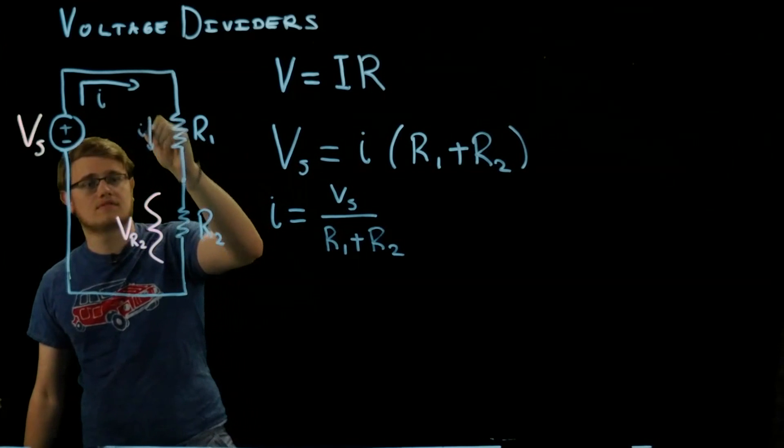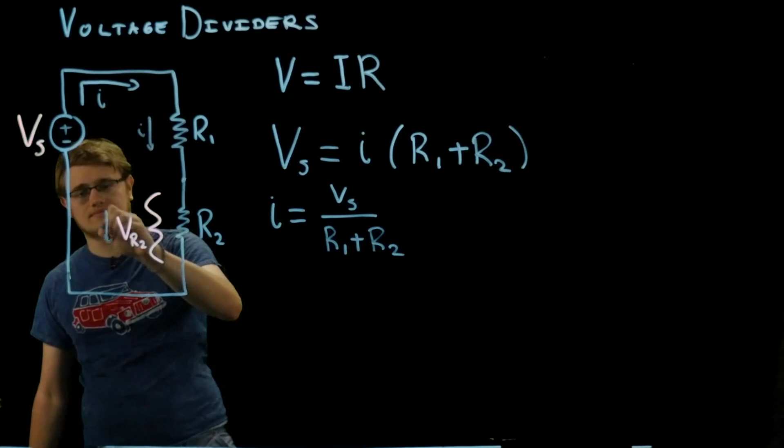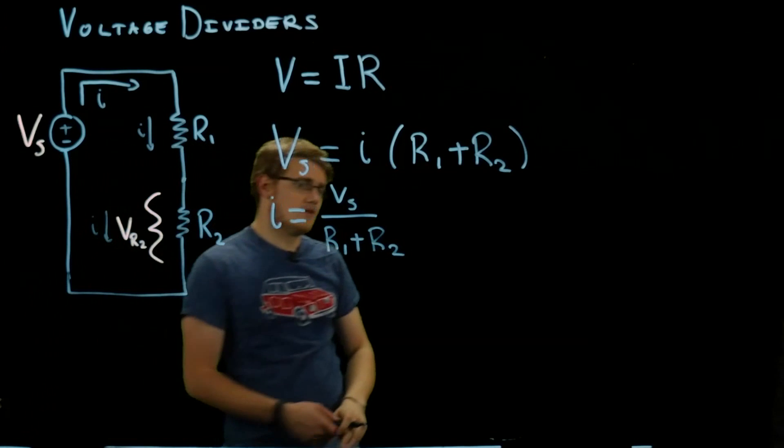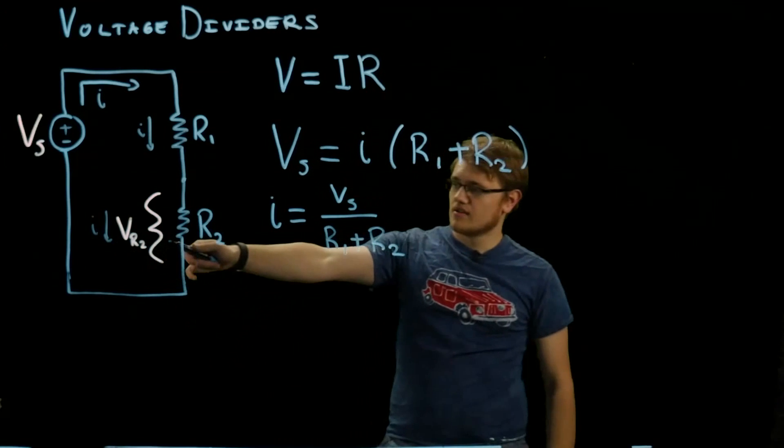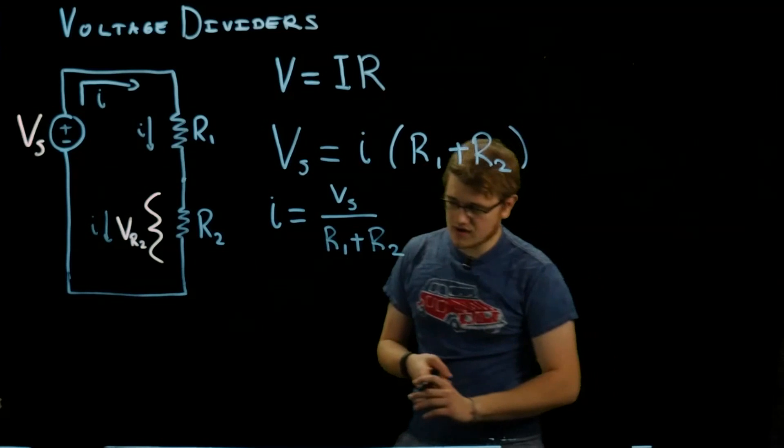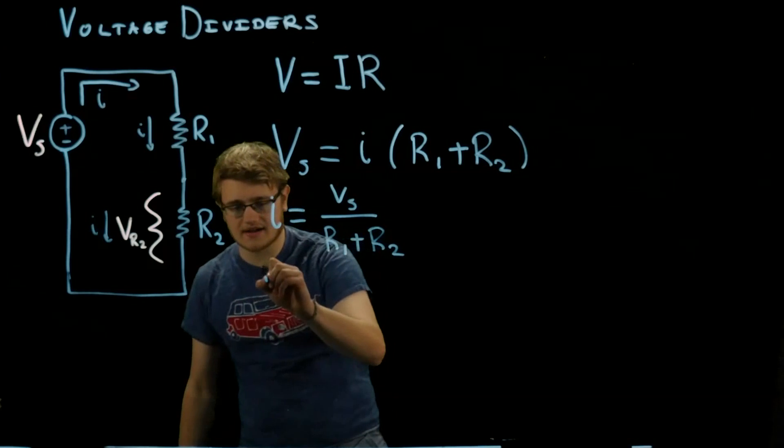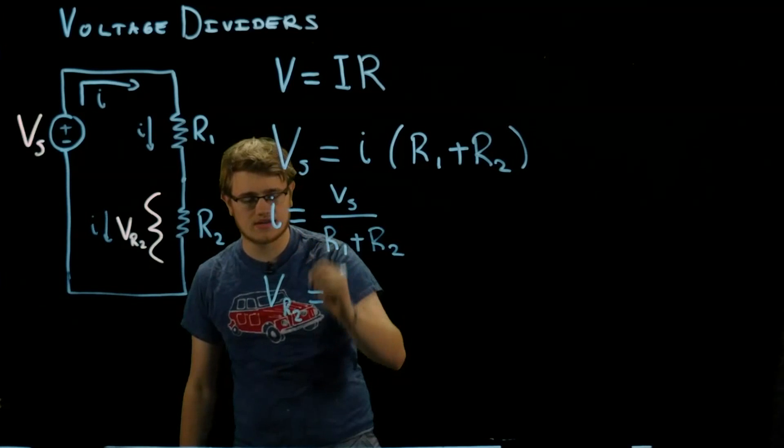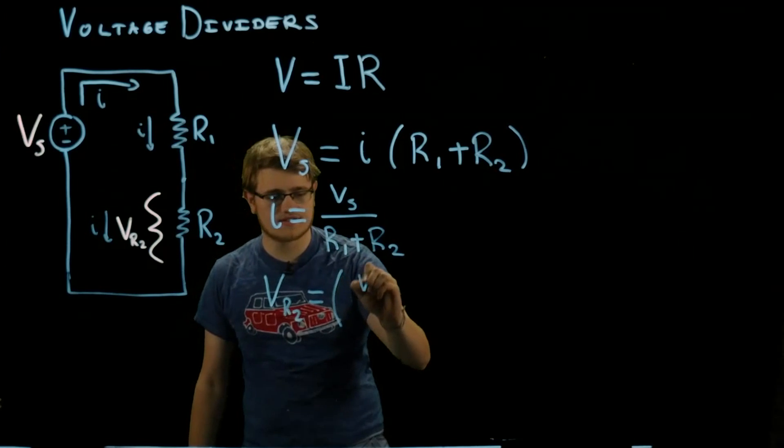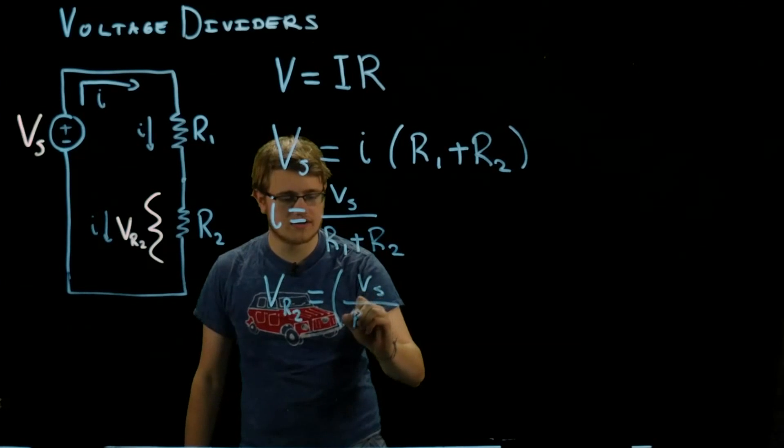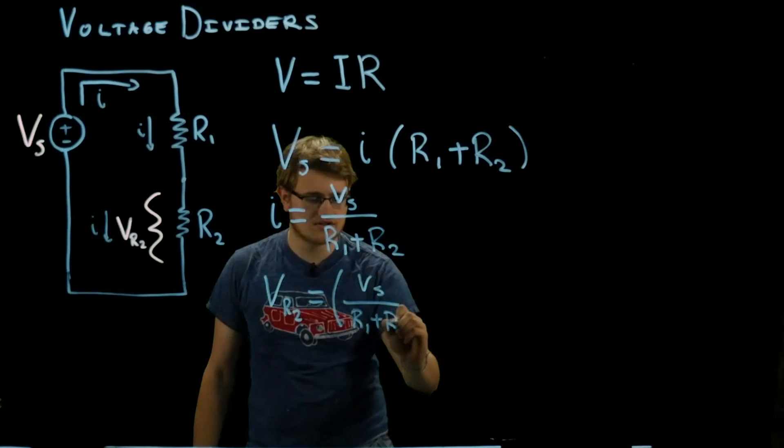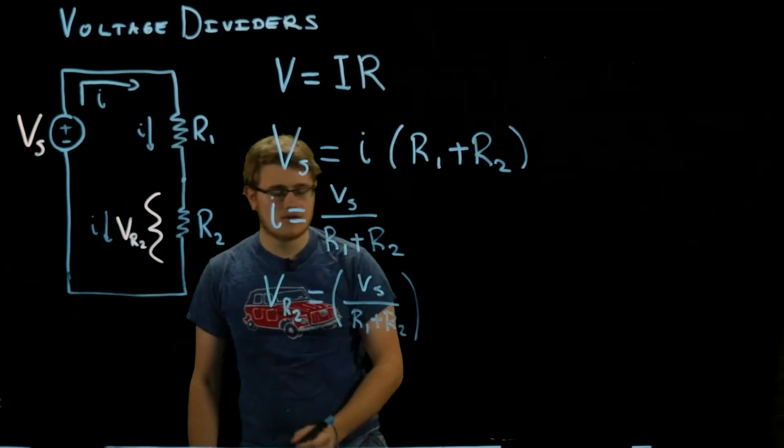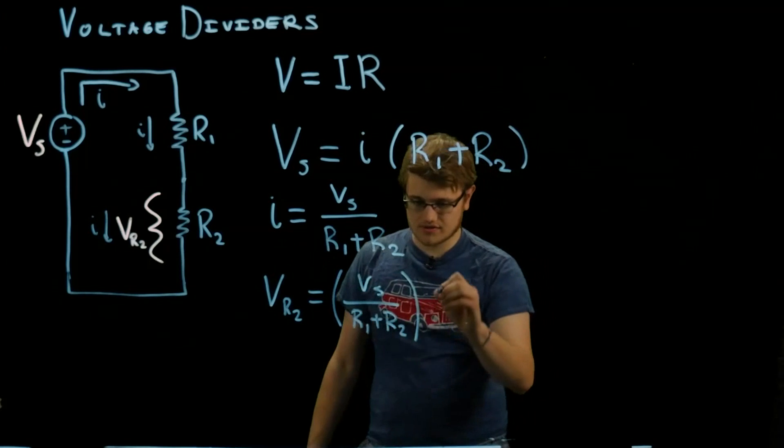Now we know that current, we can find VR2. VR2 is going to be that current that we found, Vs over R1 plus R2, and we're going to multiply that by the resistance R2, because this is just V equals IR.